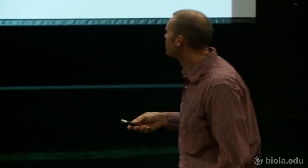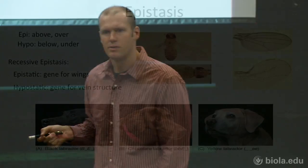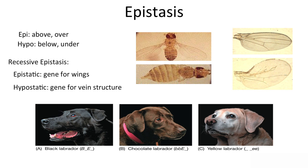Here's a second example of recessive epistasis: coat color in Labrador dogs. There are two genes. A black Labrador is dominant for the E gene. The E gene determines whether or not a lab makes pigment or doesn't make pigment. So if it's got a dominant allele of the E gene, it is going to be making pigment. That is the epistatic gene.